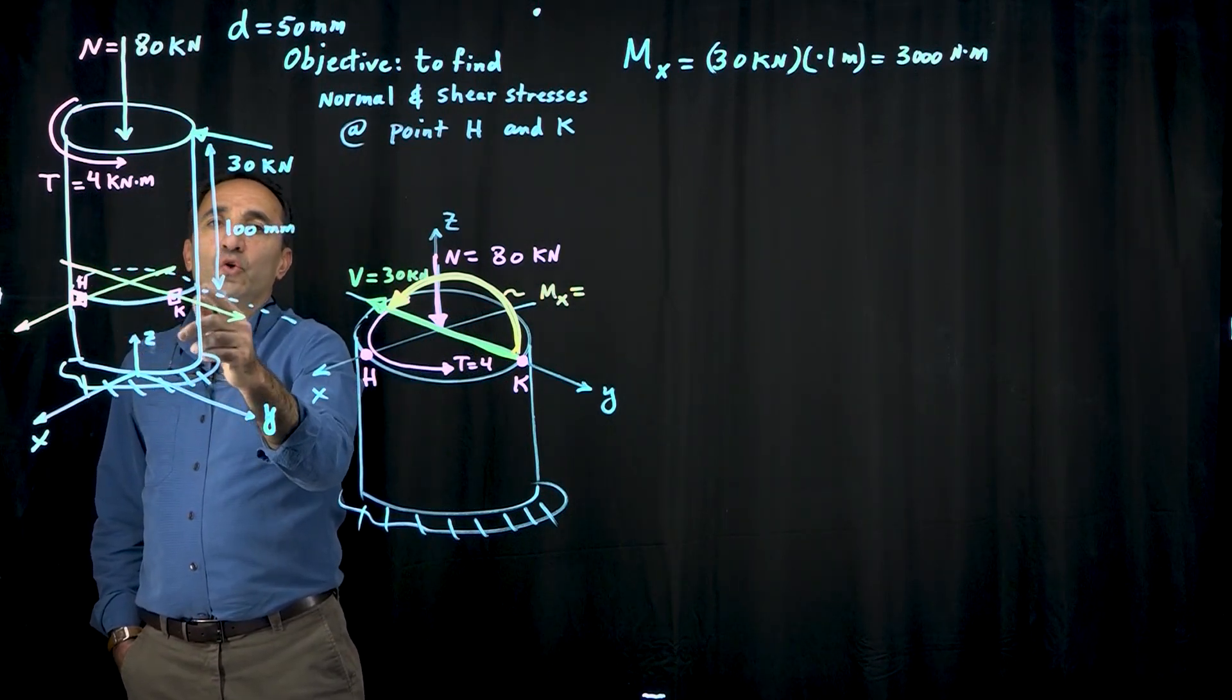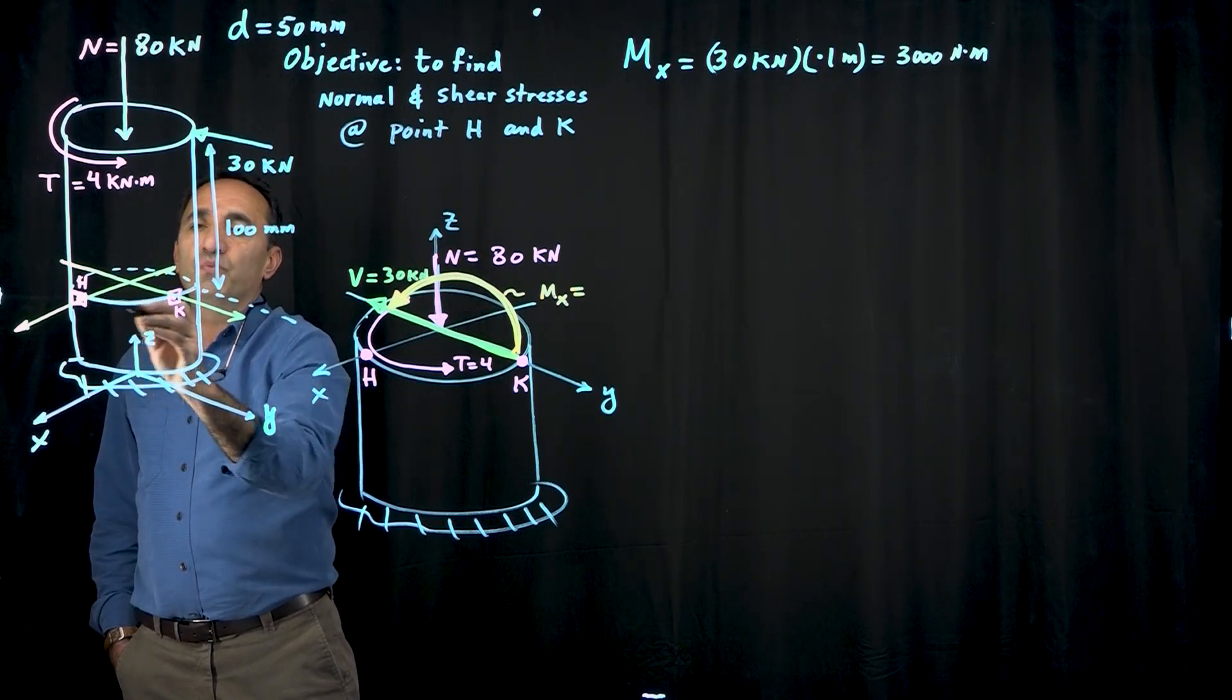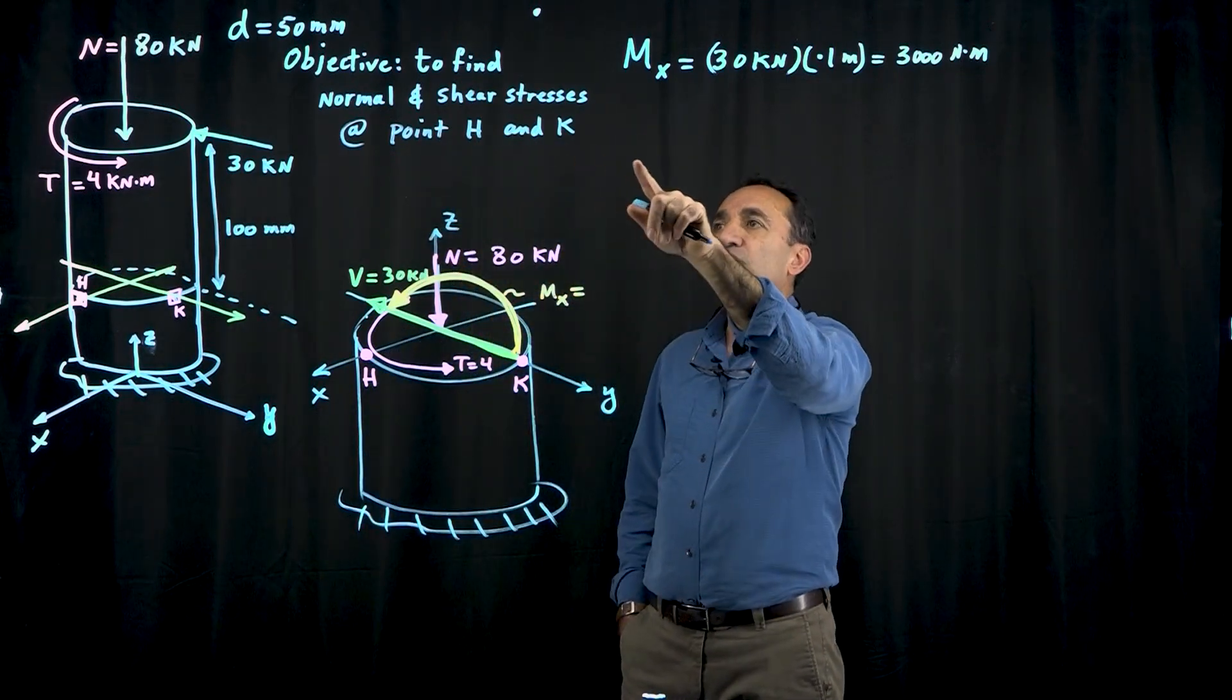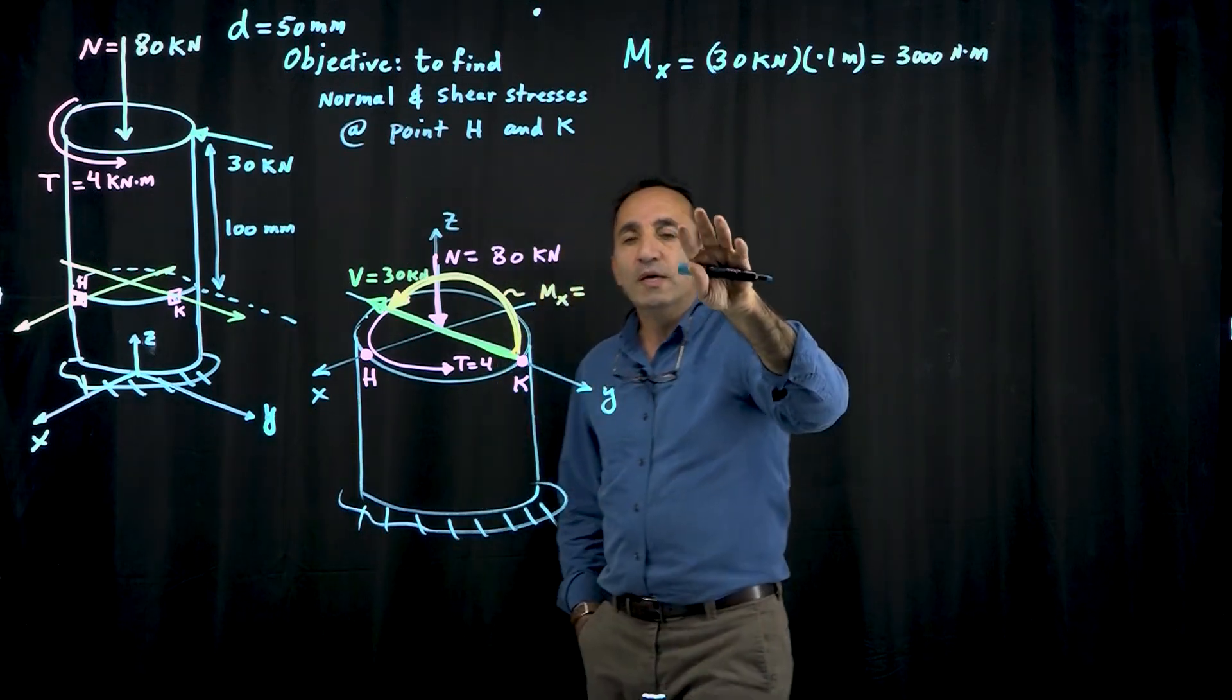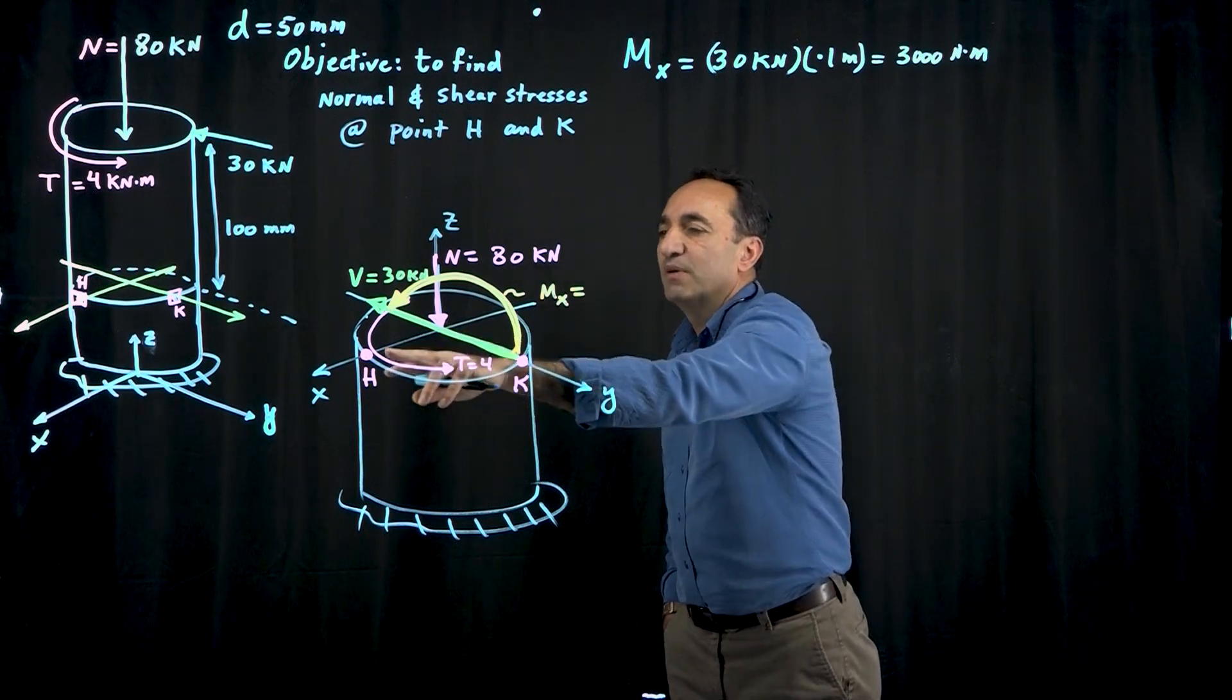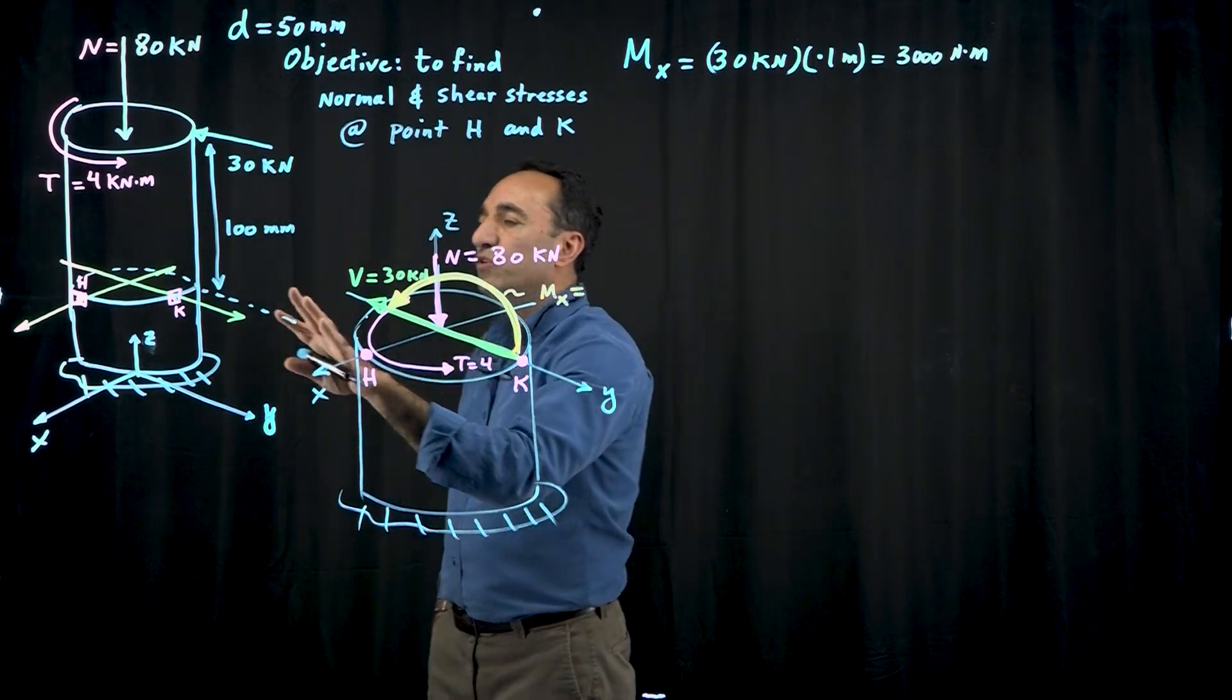The objective is, at a section 100 millimeters below the top, we want to look at two points, H and K. The objective is to find normal and shear stresses at points H and K, and then show these stresses on a stress element at each point.